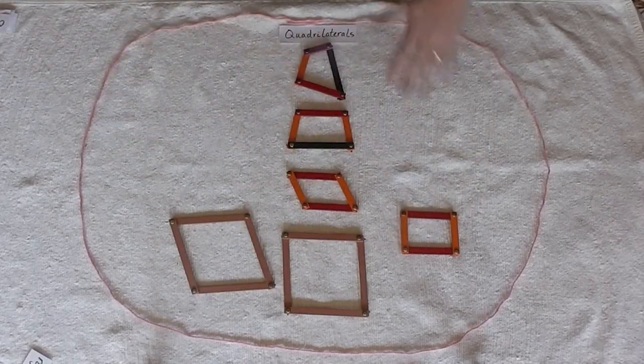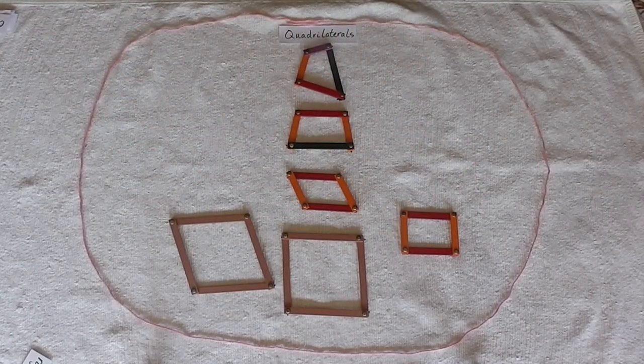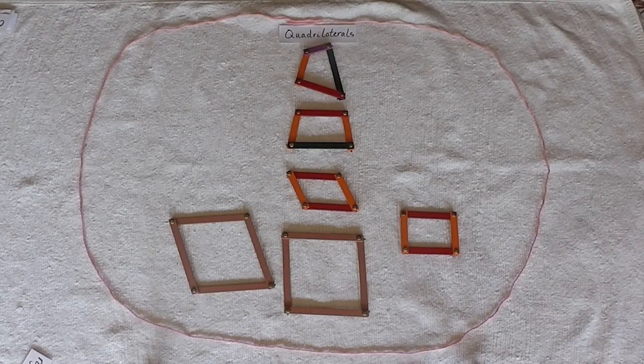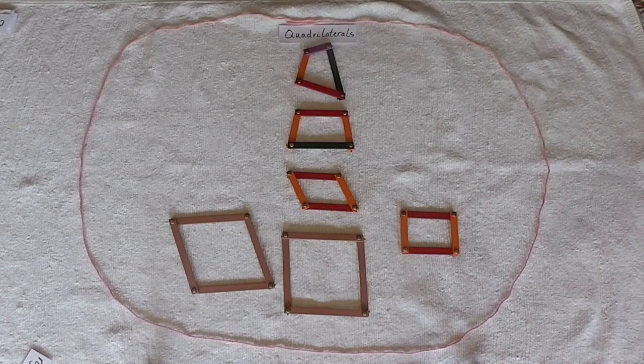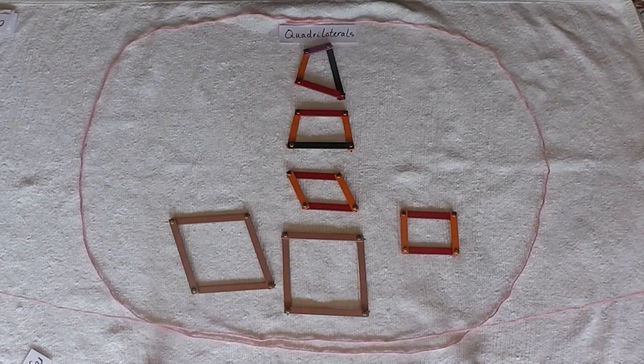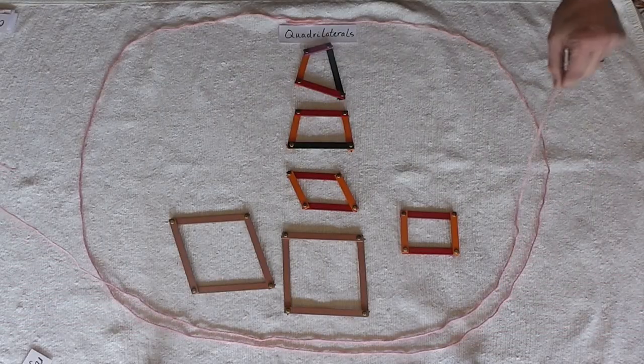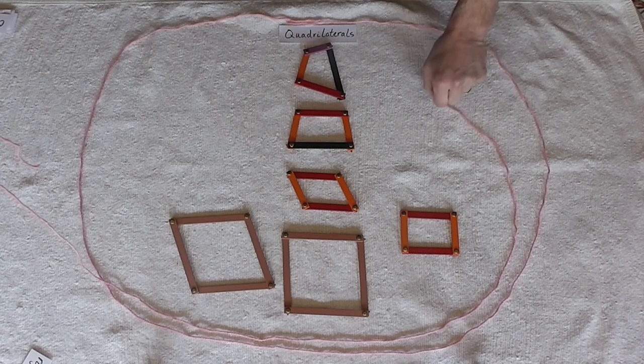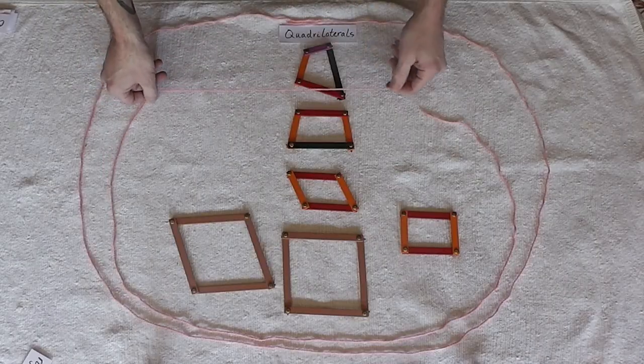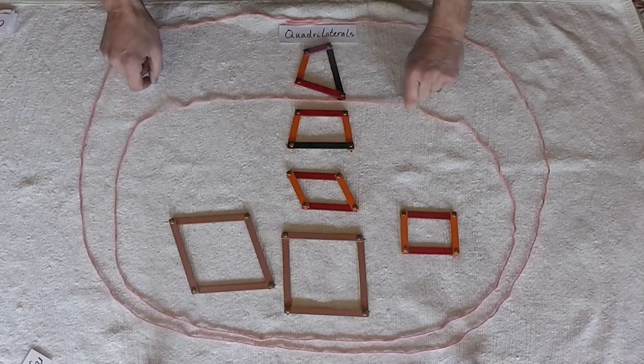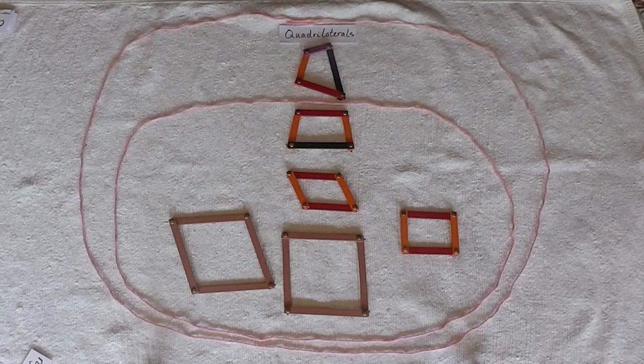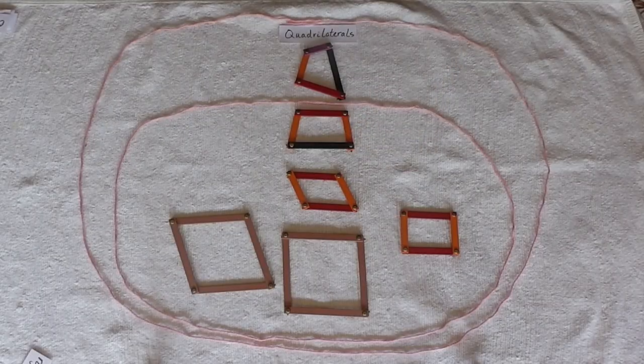So everything in this circle is a quadrilateral because it has four sides. Now I'm going to start to differentiate between the quadrilaterals by laying down more circles. So now everything inside of this circle that I just laid down is a quadrilateral. Everything in here is still a quadrilateral.